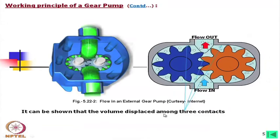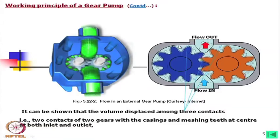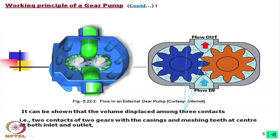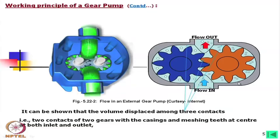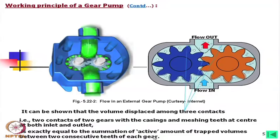It can be shown that the volume displaced among three contact points — one contact here, another contact here, and another contact here — involves two contacts of two gears with the casing and the meshing teeth at center at both inlet and outlet. One chamber means considering the instantaneous last teeth in contact on both sides and the contact point here — this is the compression chamber. Similarly, the suction chamber is defined with the corresponding contact points.